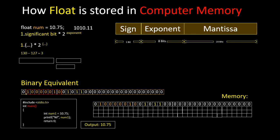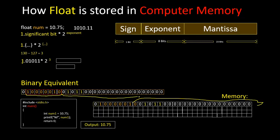For the exponent bits 10000010, that's equivalent to 130, and 130 minus the bias value 127 equals 3 — so we recover the exponent. Then we have the format 1.01011, where 01011 is the significant bit stored right after the exponent in memory. We reconstruct 1.01011 times two to the power 3, which gives us back 10.75. The sign bit is 0, so this is a positive number — that's how the program calculates 10.75 from its binary representation.